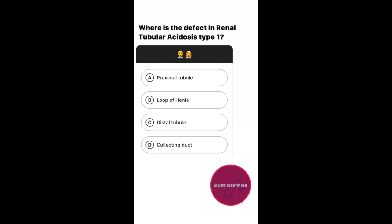The defect in renal tubular acidosis type 1 is in the distal tubule. Proximal tubule is associated with renal tubular acidosis type 2. The loop of Henle is not involved in renal tubular acidosis. Renal tubular acidosis type 4 involves the collecting duct.